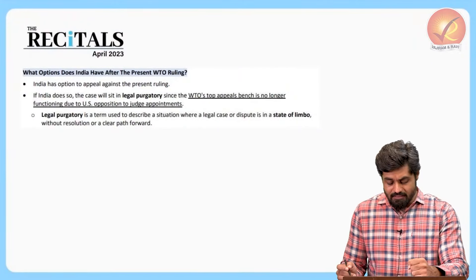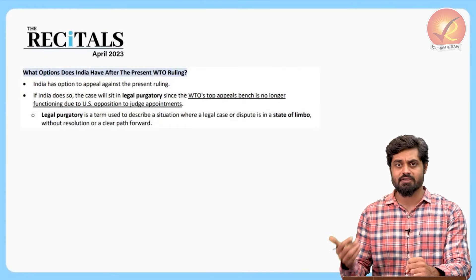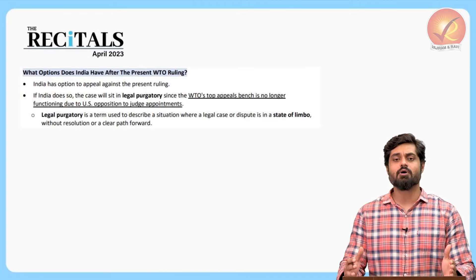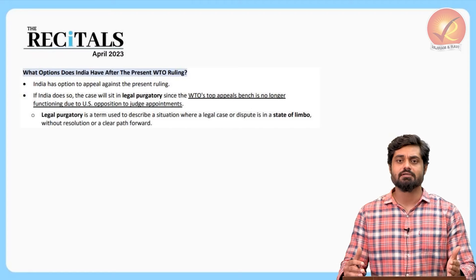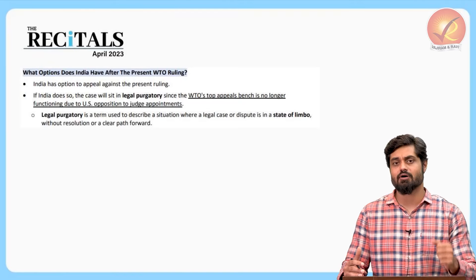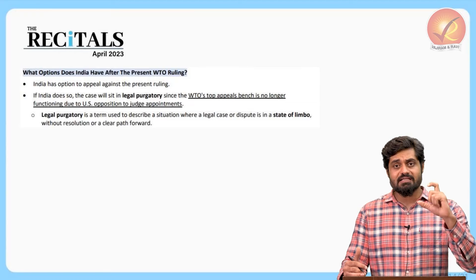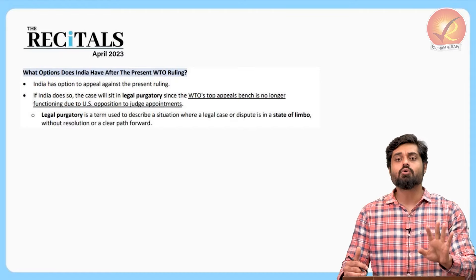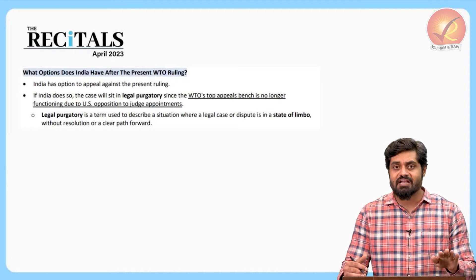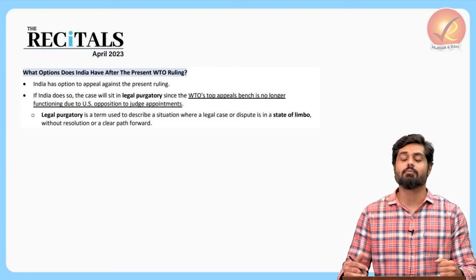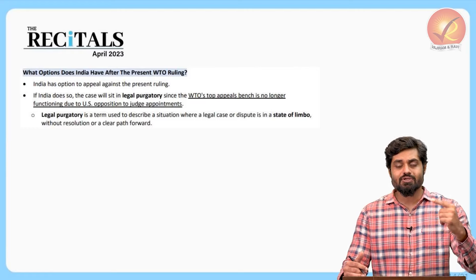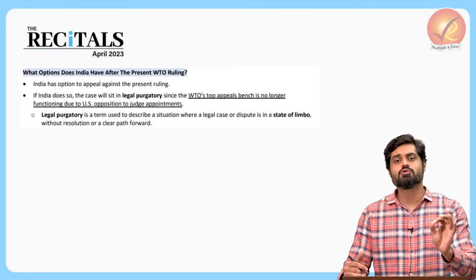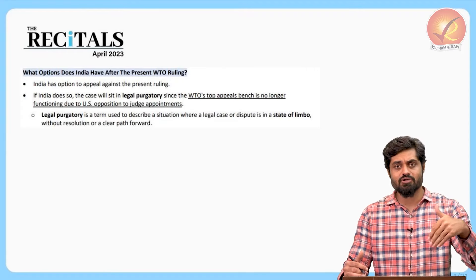WTO's dispute redressal system provides rules which all member countries must follow, with freedom of trade being an important requirement for the promotion of global trade. Unless there is a mechanism to penalize defectors who do not obey the rules and impose costs on them, no rule or body can effectively function. Therefore, a dispute settlement mechanism is provided so that its rulings are binding, and non-compliance results in increased penalties or restrictions on exports.